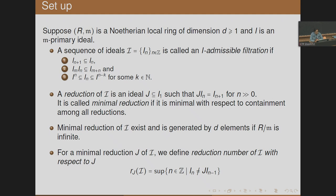For a filtration, we define reduction. Reduction is an ideal J such that J·I^n equals I^{n+1} for all large n. It is called a minimal reduction if it is minimal with respect to containment among all reductions. When the residue field is infinite, minimal reductions exist, and therefore we assume for all our statements that the residue field is infinite; there is a standard way to reduce to that case.